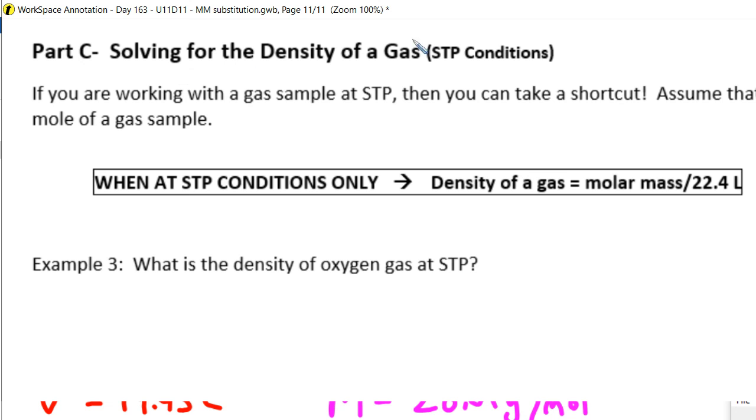And then part C. So what happens if you're at STP? If you're at STP, you can take a shortcut. And so when you're at STP conditions, remember one mole of any gas at STP will take up a volume of 22.4 liters.